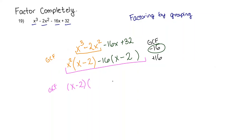Because that is the greatest common factor that this term and this term have in common. When I take out my x minus 2 from this term, I'm left with x squared. And when I take out my x minus 2 from this term, I'm left with negative 16.